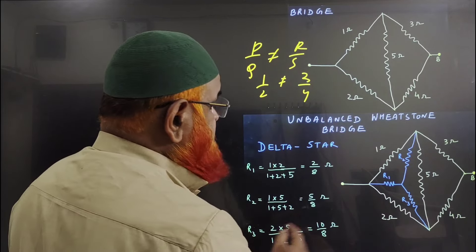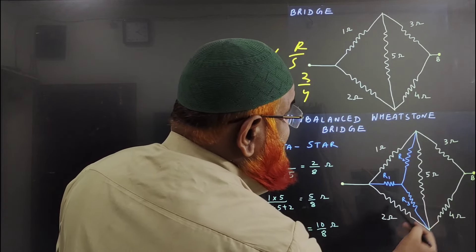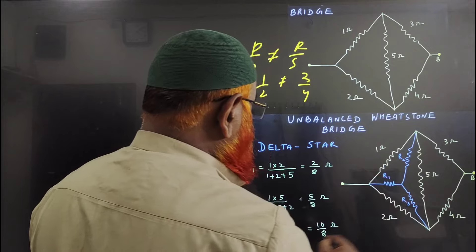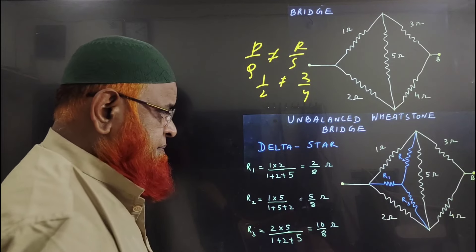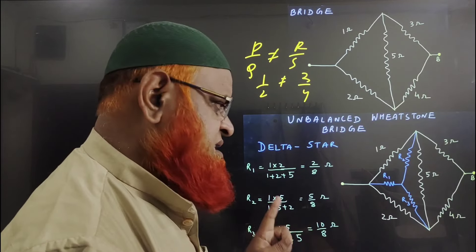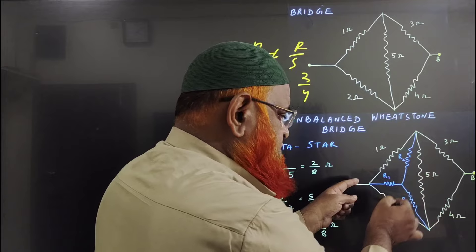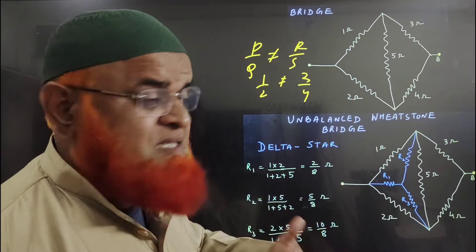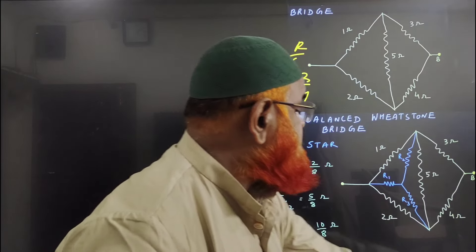Now let us take R3. This is the product of either sides: 2 into 5 divided by sum of all three. So I'm getting 2 by 8, 5 by 8, and 10 by 8. This 1 ohm, 5 ohm, 2 ohm can be removed and replaced with R1, R2, and R3.